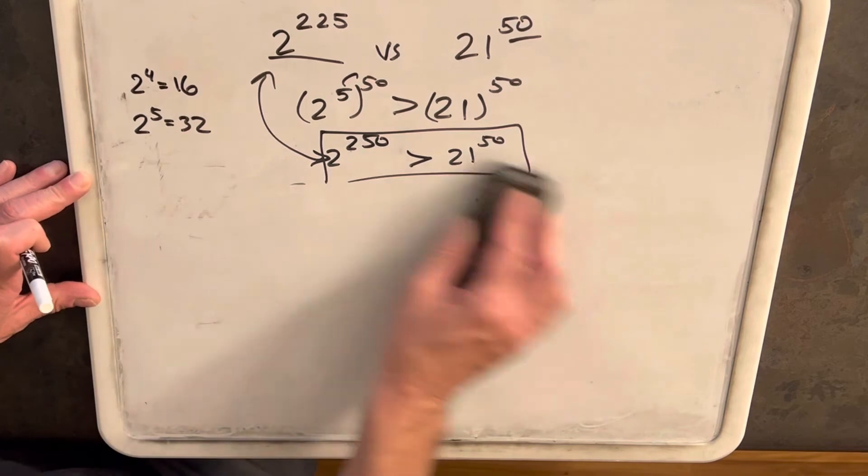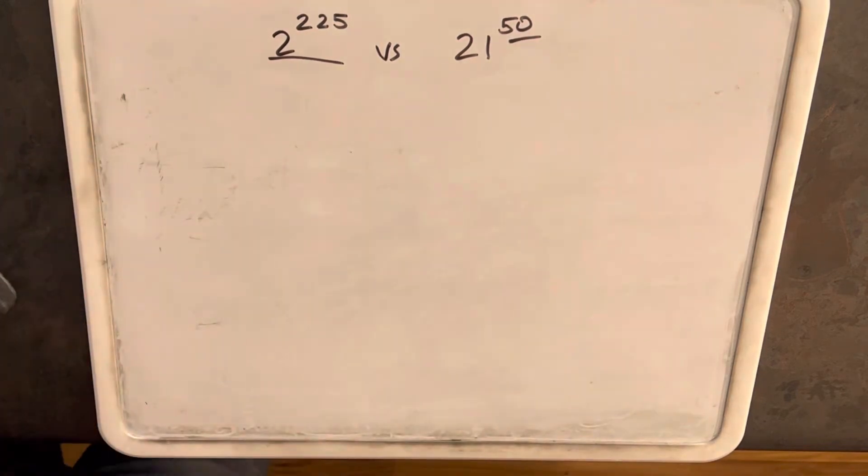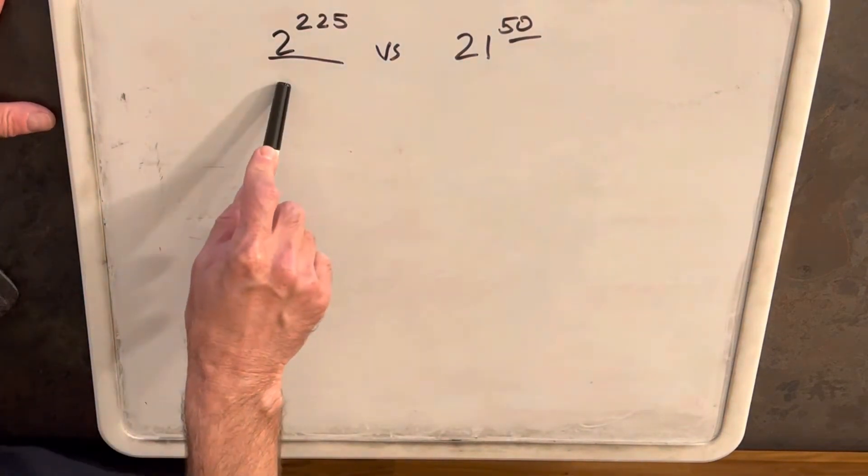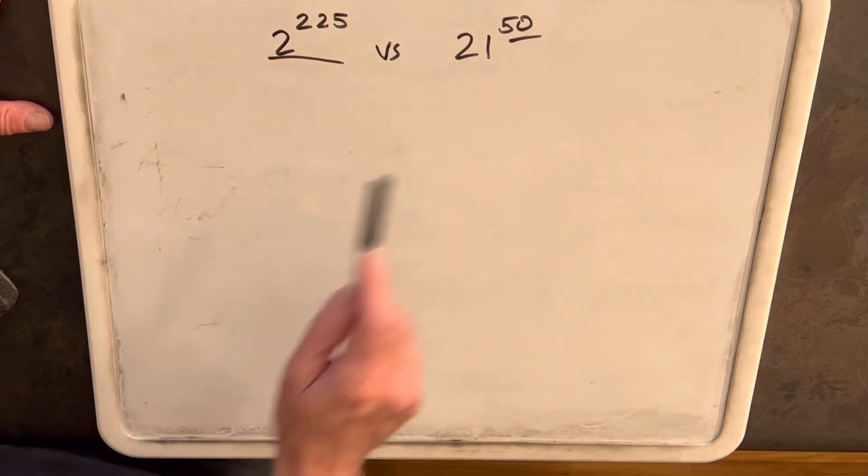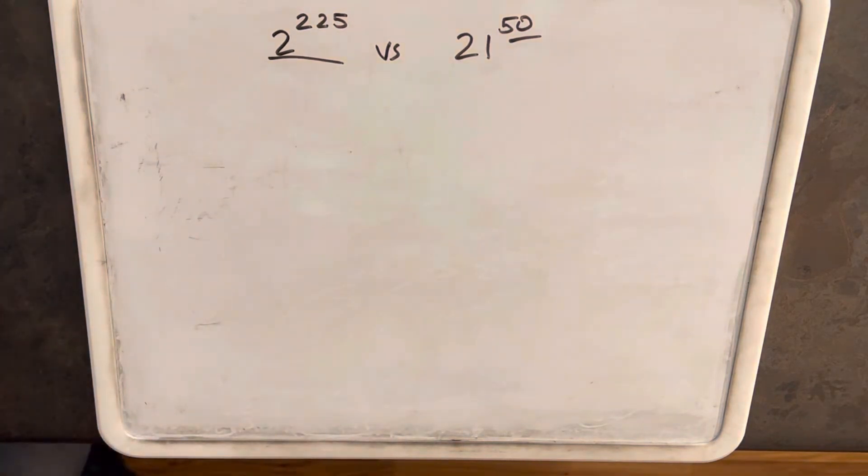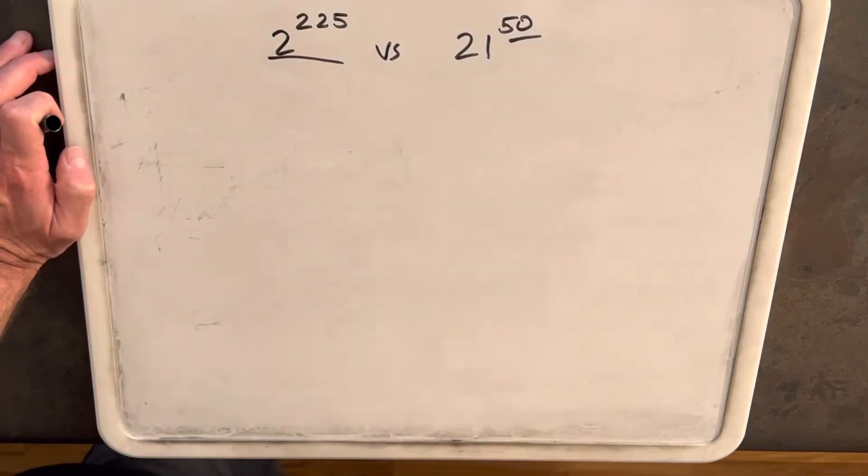So one thing we haven't looked at, we've been looking at powers of 2 to compare to 21. We haven't been looking at powers of 21 because it's a bigger number and it's going to get messy fast. But what we can do is just look at 21 squared.